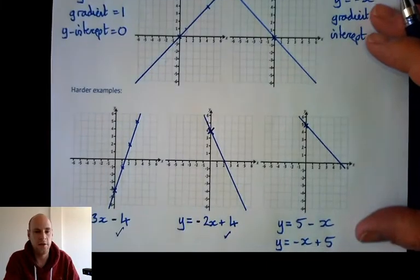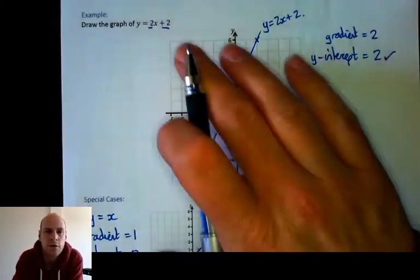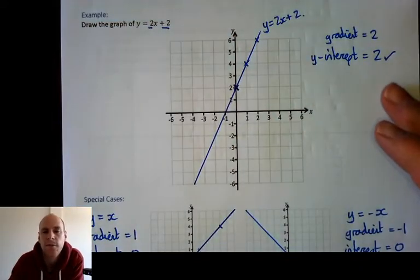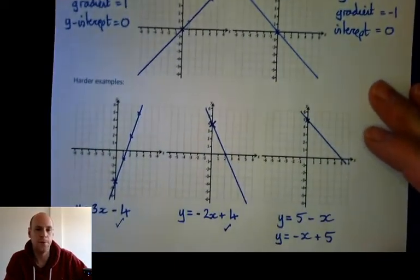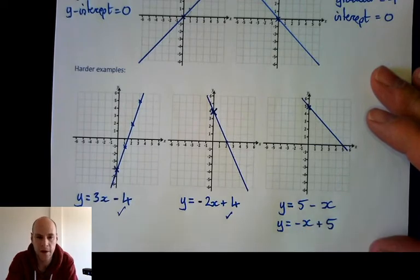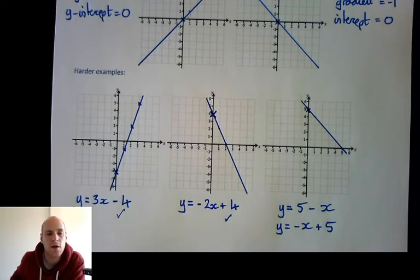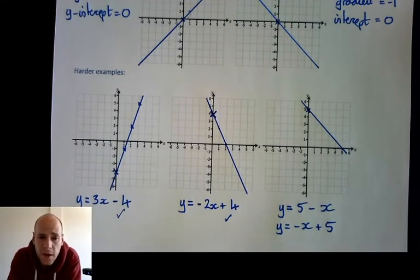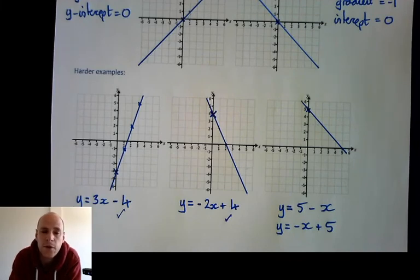That's it from me for today. We've hopefully learnt how we can draw straight line graphs without having to use a table of values, and we've made things progressively more difficult — that last example was quite tough: we had to rearrange it, then identify the gradient and y-intercept, and finally draw it. There's one last activity — 10 or 15 minutes, don't spend any longer than that. Obviously, if you want to go back and have a look at one of the sections whilst doing the exercise, that would be sensible. Bye for now.